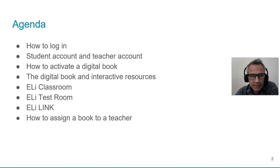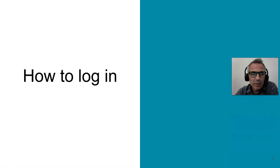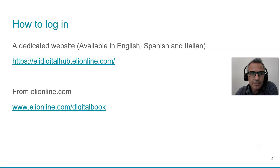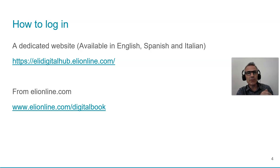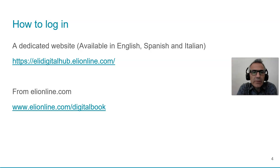This is our agenda: how to log in, create accounts, digital books, activating them, interactive resources, our classroom, our test room, our app, assigning books to teachers — all in the context of digital resources. We have a number of slides here. To log in, you click any of these links — we have a dedicated website available in different languages, or you can go to ellieonline.com and find your way to the hub through the link where it says 'Digital Book'.